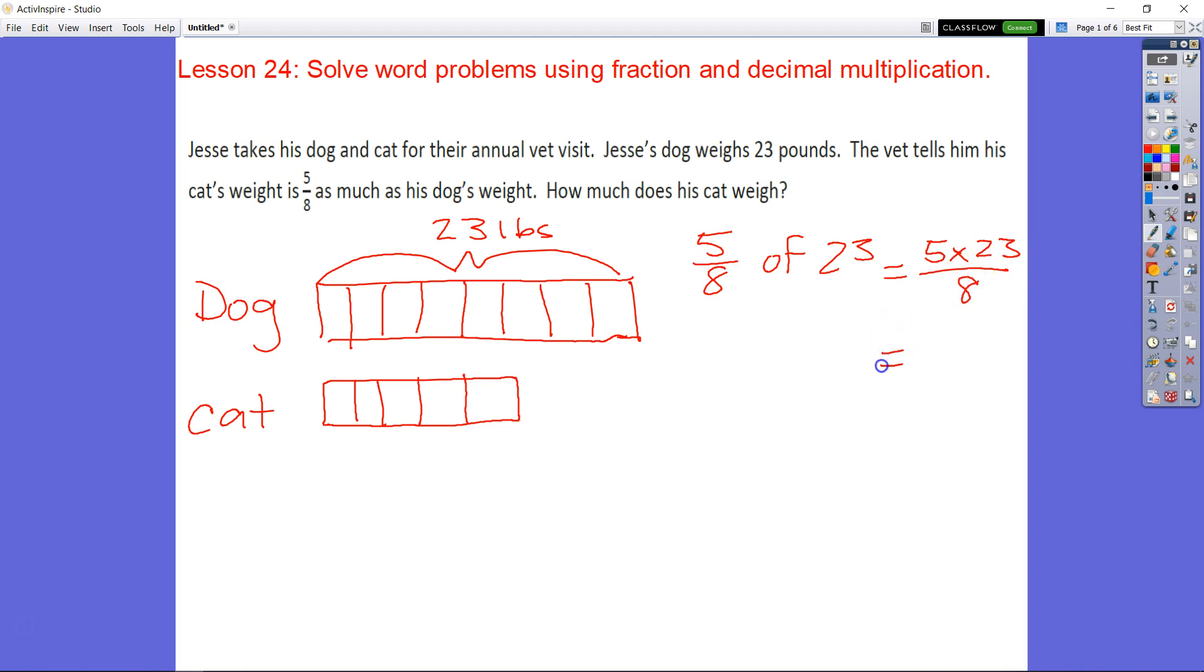That's equal to 5 times 23 over 8. 5 times 23 gives you 115. We divide that by 8. We get 115 divided by 8. That's going to be 14 and 3 eighths.